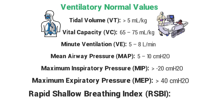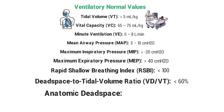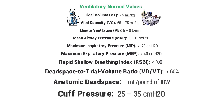The RSBI, or rapid shallow breathing index, should be less than 100. The dead space to tidal volume ratio should be less than 60 percent. The normal anatomic dead space should be 1 milliliter per pound of ideal body weight — so if the patient weighs 150 pounds, they should have 150 milliliters of anatomic dead space. The normal cuff pressure should be 25 to 35 centimeters of water pressure.